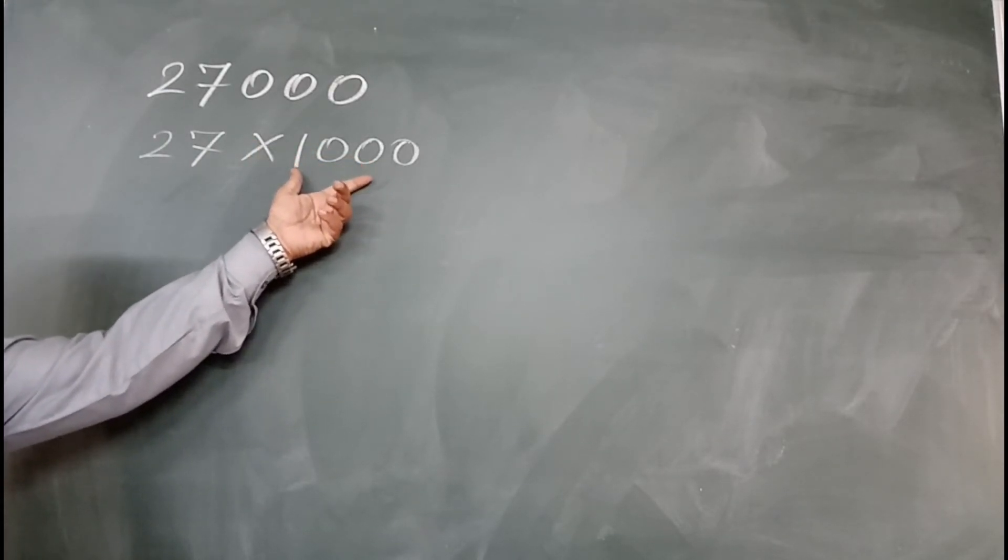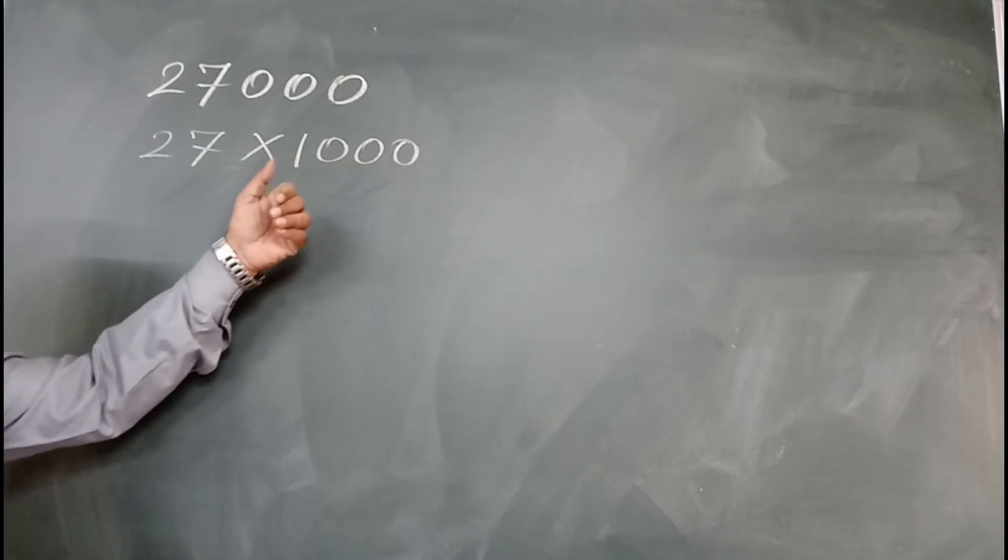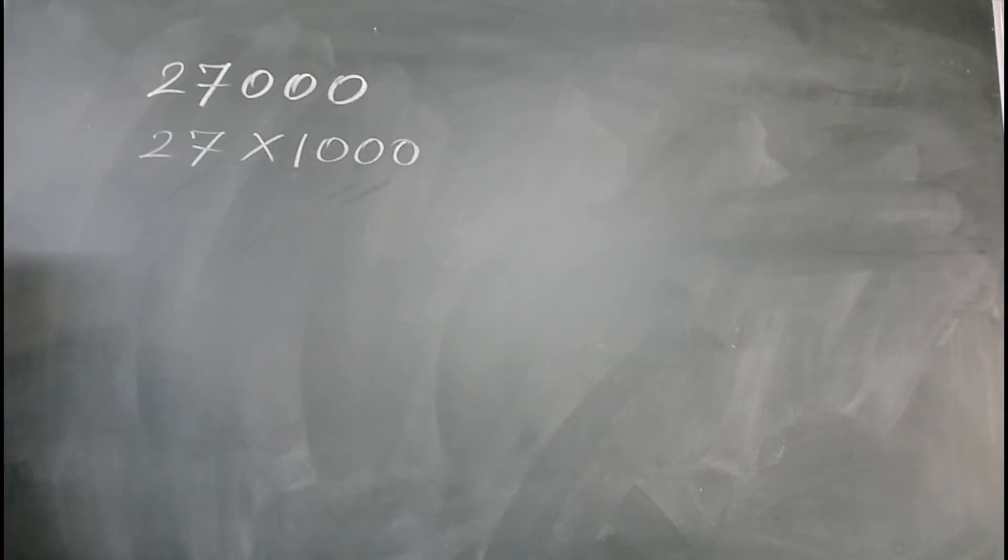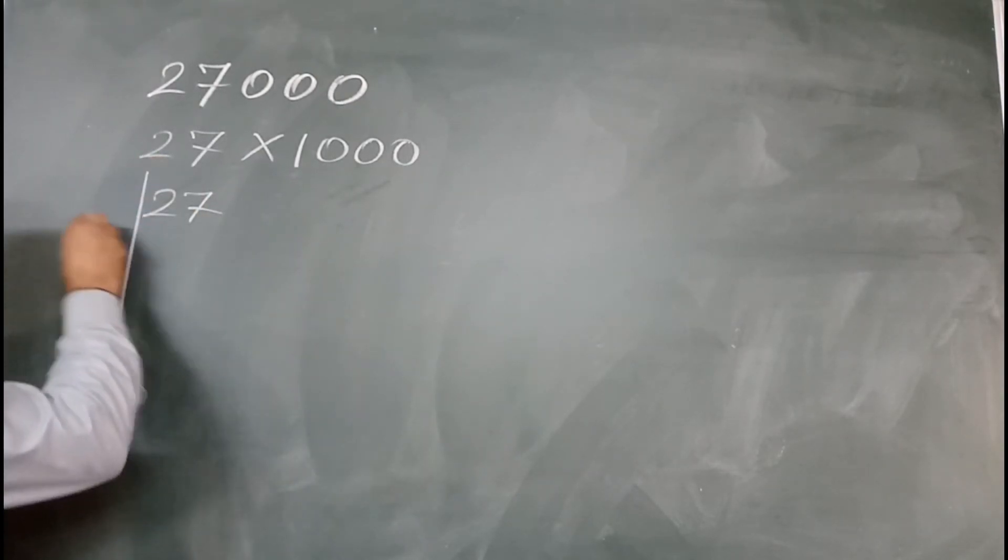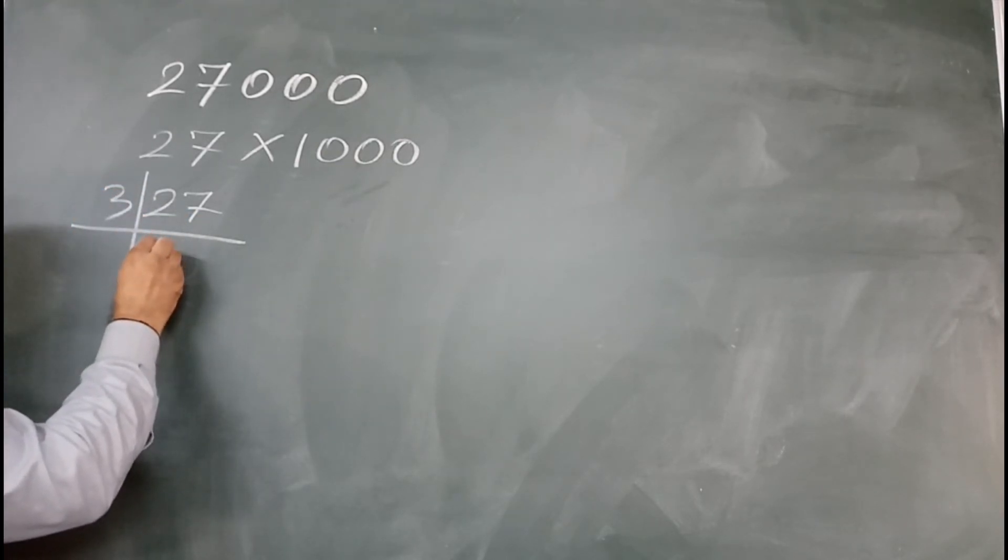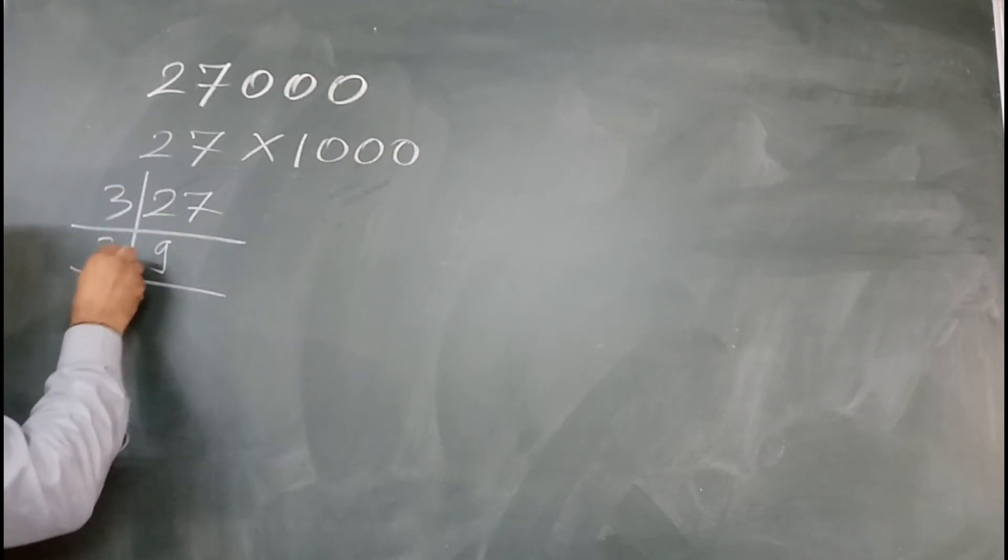You know well, 10 cubed is 10 times 10 is 100, times 10 is 1000. Then you only need to find the cube root of 27. So you can find the factors of 27: 3, 9, 27, 3, 3.